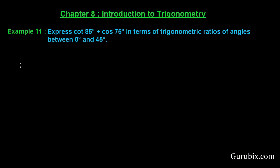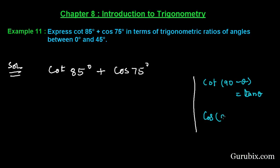This is very easy. Let us see how to do it. We have cot 85° + cos 75°, and we know that cot(90° - θ) equals tan θ and cos(90° - θ) equals sin θ.